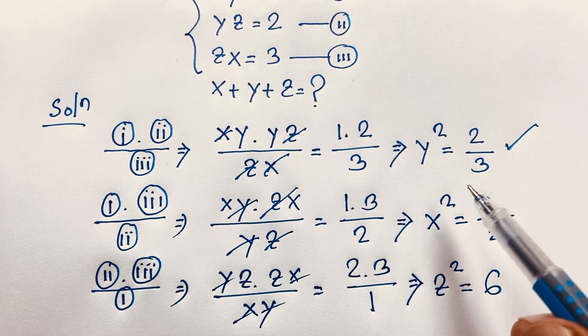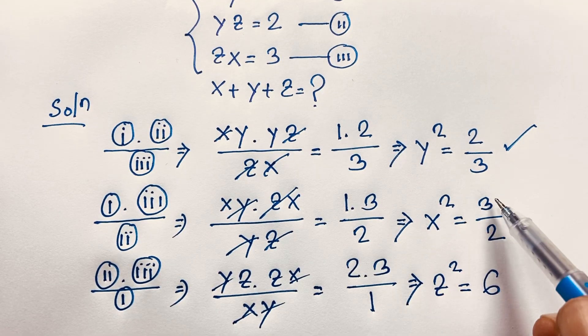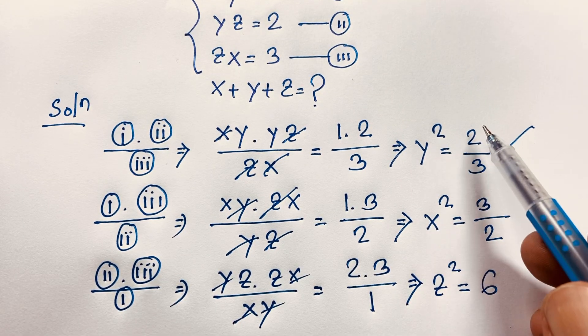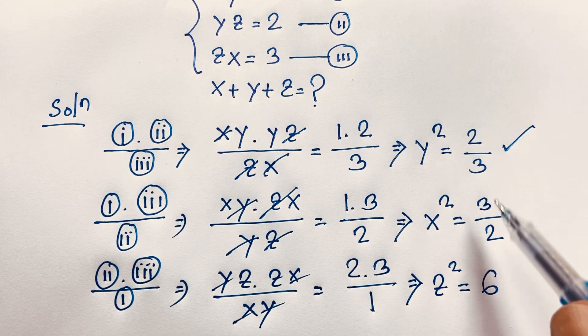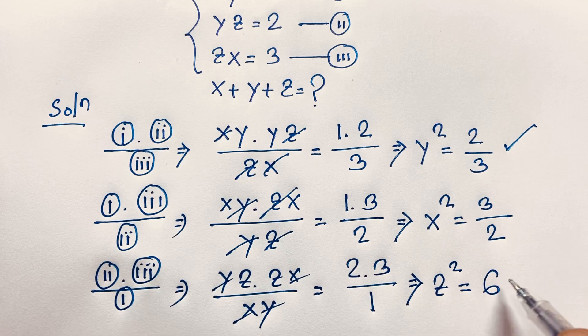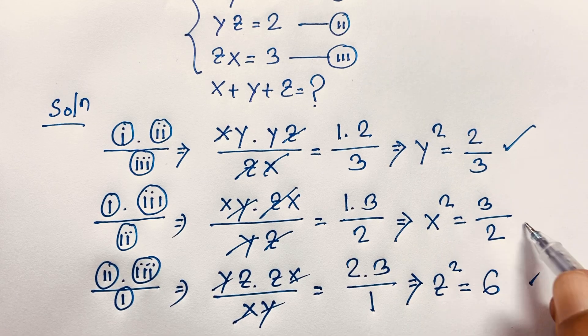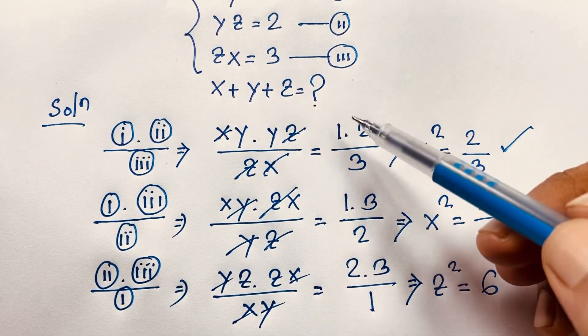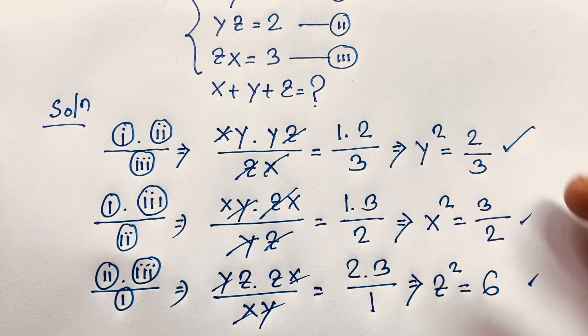So we have found: x² = 3/2, y² = 2/3, and z² = 6. But our target is x + y + z — how do we find that?